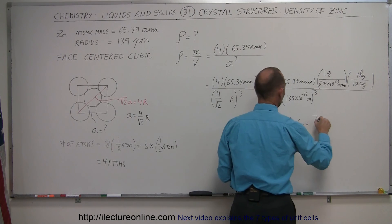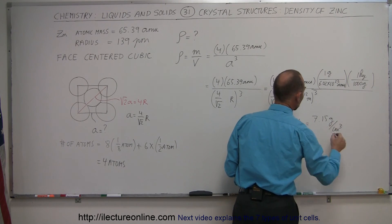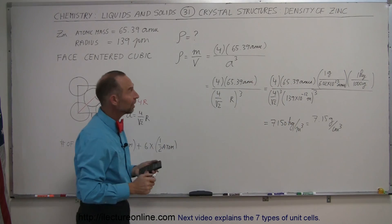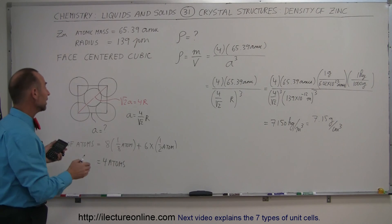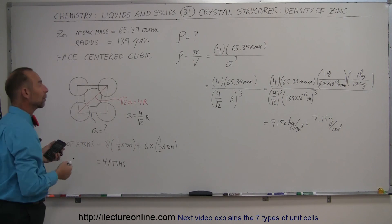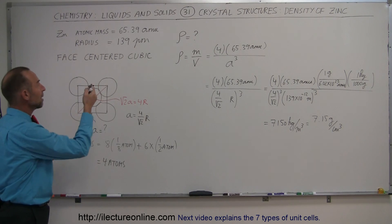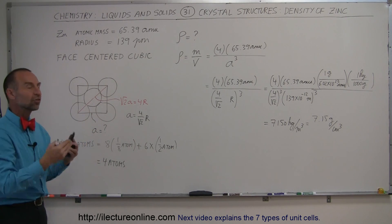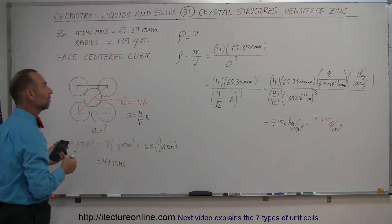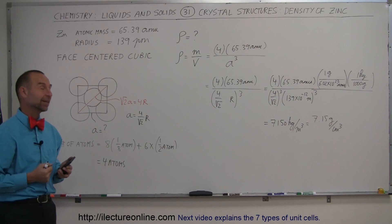And that would then be equal to 7.15 grams per cubic centimeter. There's the density of zinc. And again, we are able to calculate that simply by understanding the packing density, how it's packed. It's packed in what we call face-centered cubic, by knowing the mass per atom, by being able to calculate the volume of the unit cell that contains four equivalent atoms of zinc, and the density is therefore mass divided by volume. That's how we do that.